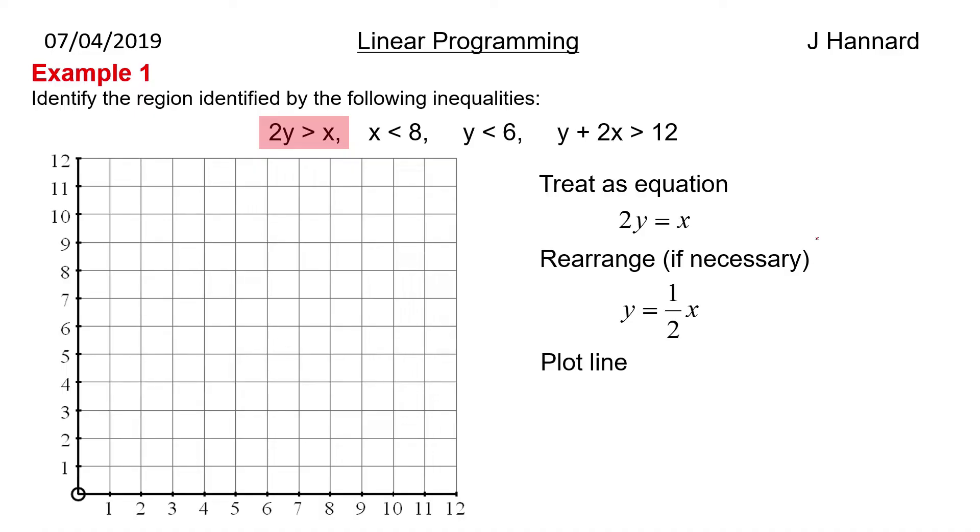Plot the line. There's nothing really to it. We draw the line in. That's the line y equals a half x. And then we read the original inequality. Well what we wanted was 2y greater than x. So we want the region that is above the line. So we shade the opposite. So we shade under the line.